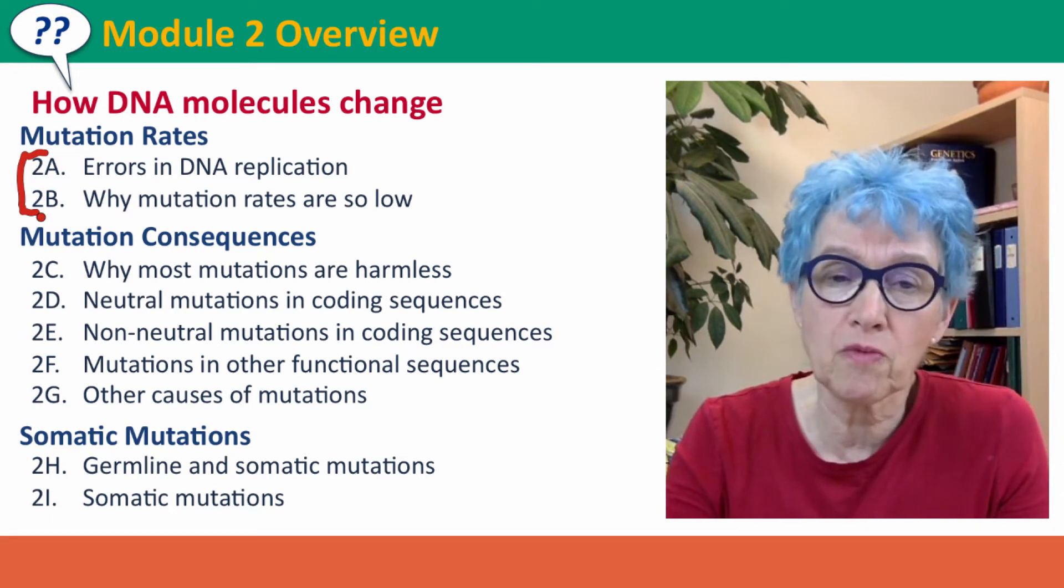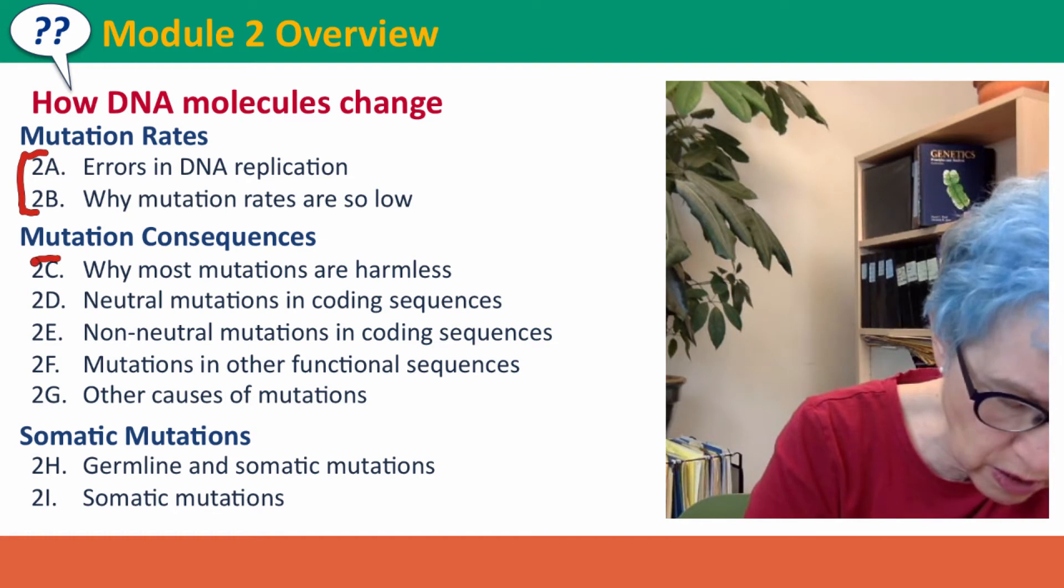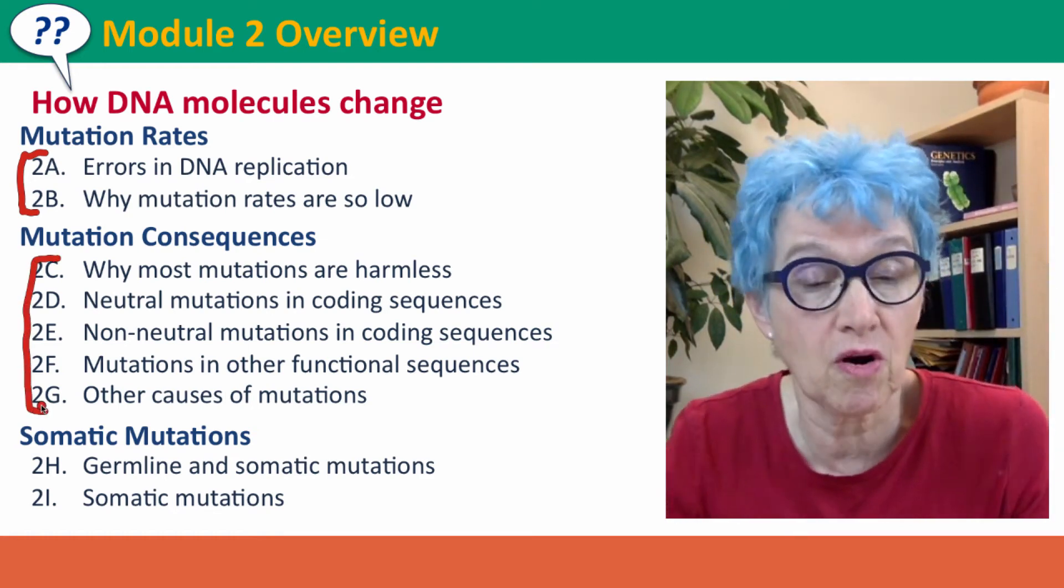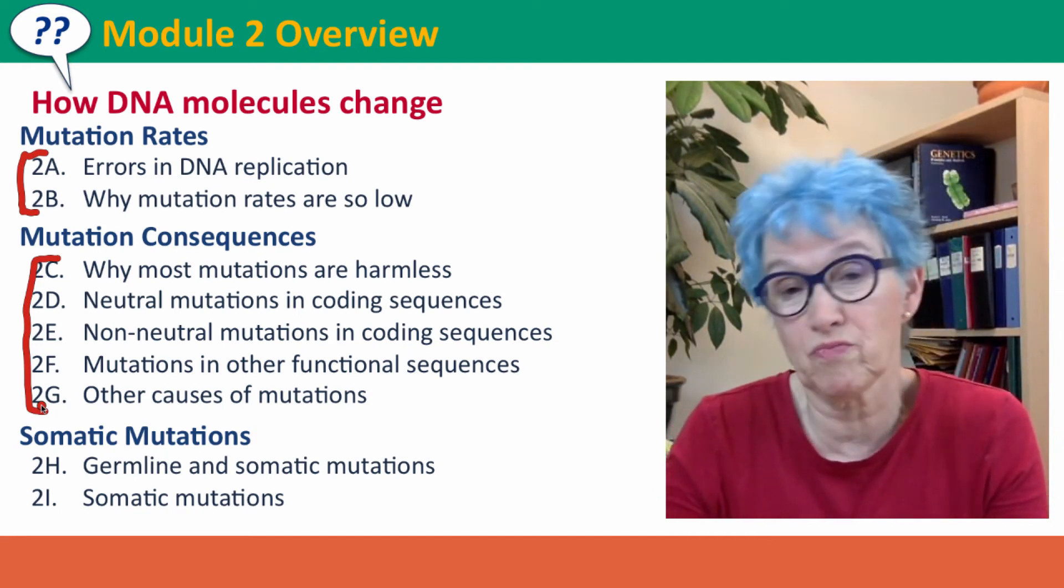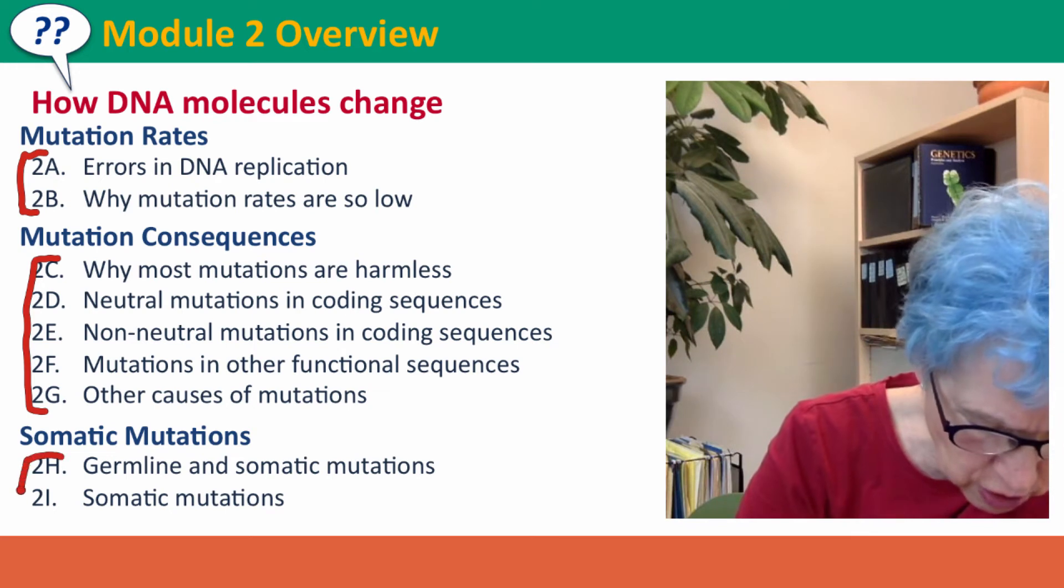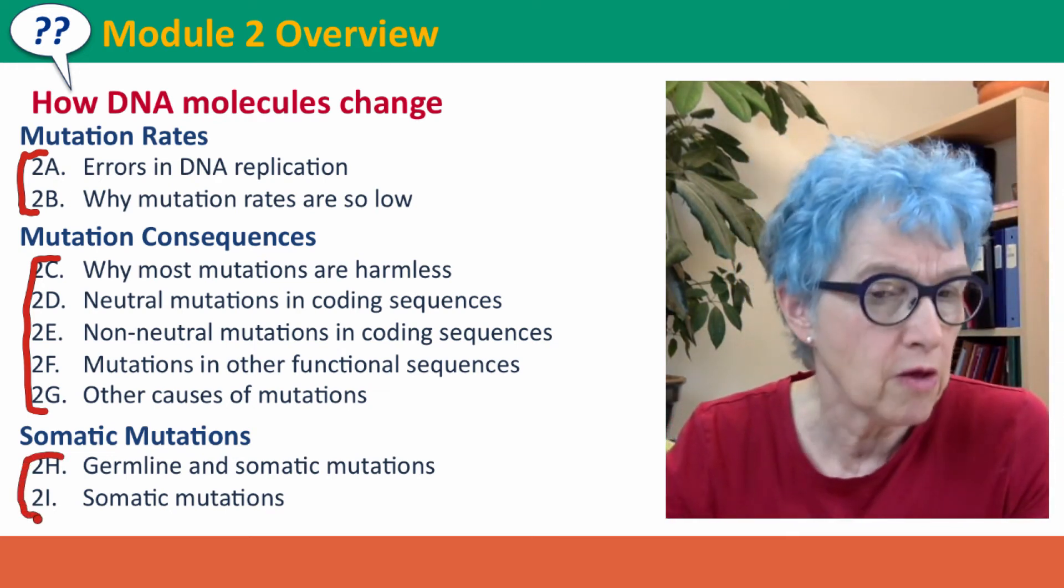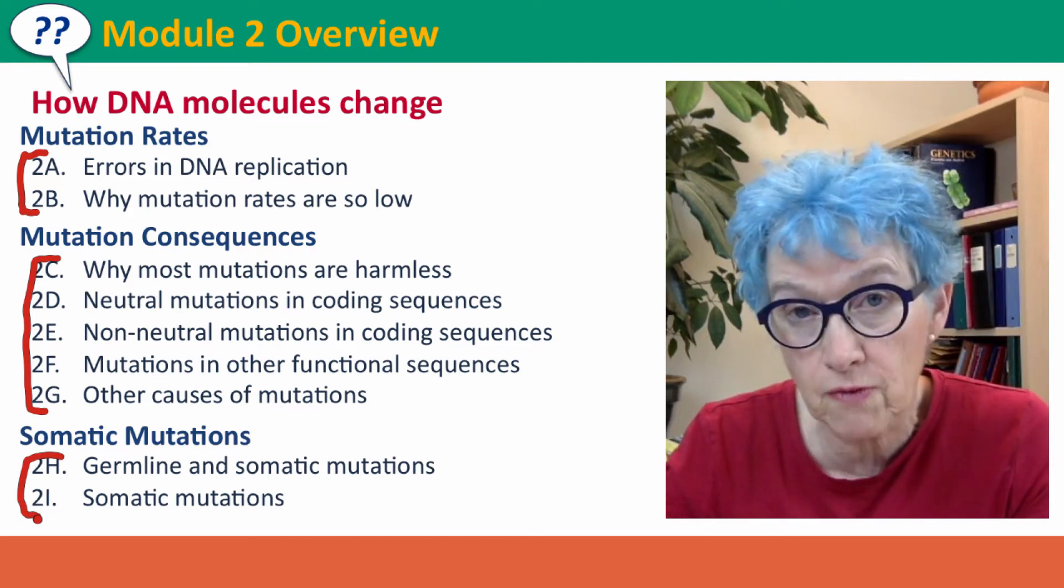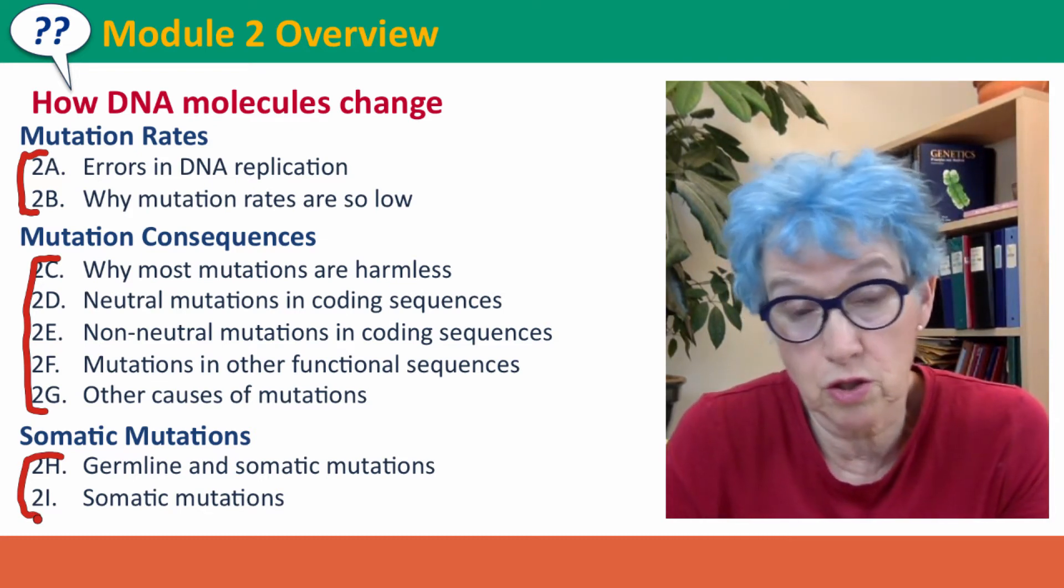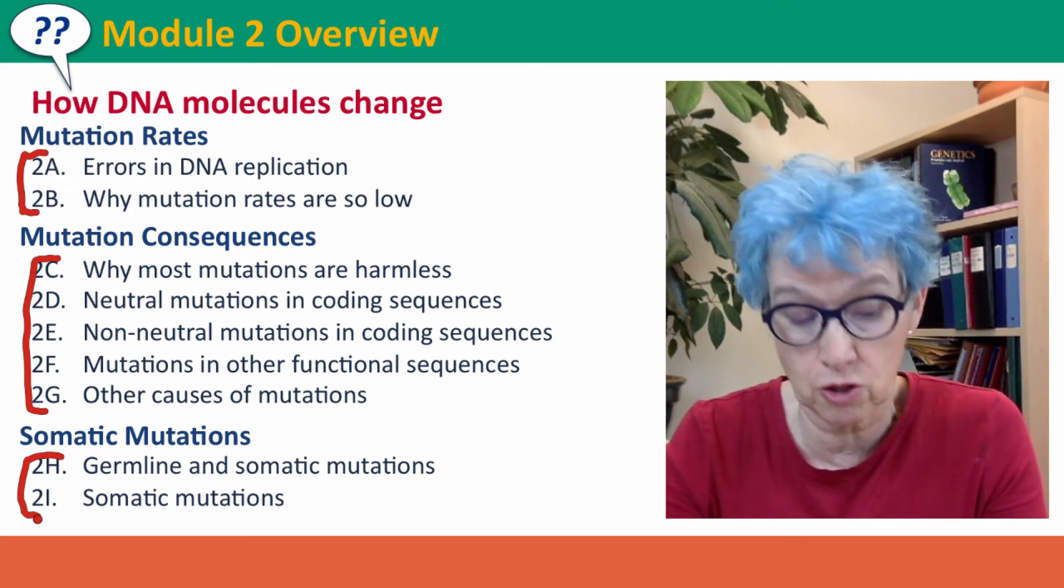We'll talk about the consequences of mutations in a series of lectures, why most mutations are harmless, and the kinds of harm that other mutations do. We'll consider briefly beneficial mutations as well. We'll make the important distinction between somatic mutations and germline mutations. The latter we can pass on to our offspring, but the former, which are restricted to cells that don't pass to the next generation, these are the mutations that cause cancer.